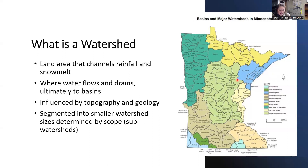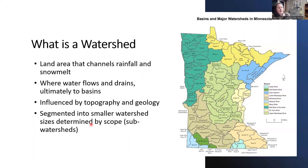Minnesota has 81 watersheds, and these colors are distinguished by basins. The basins along here all flow to Lake Superior, and then eventually to the Great Lakes and the Atlantic Ocean. Up here, we also have the Rainy River headwaters within our counties, and all of these in yellow will flow to the Red River and then eventually to Hudson Bay. Everything is connected, and you can take a watershed and subdivide it into sub-watersheds.